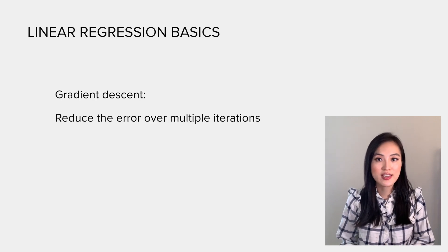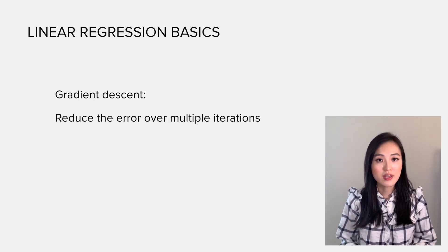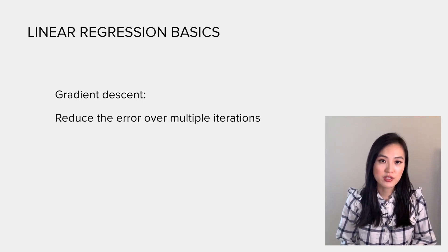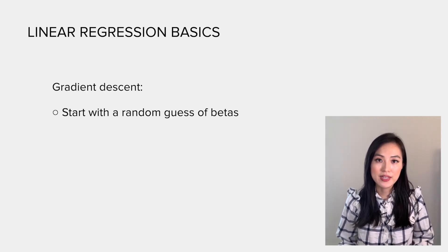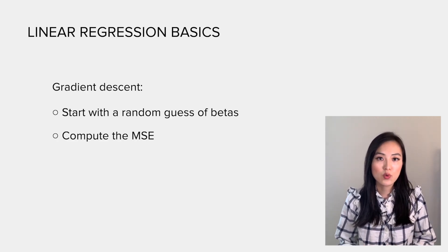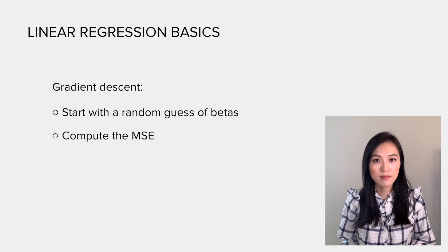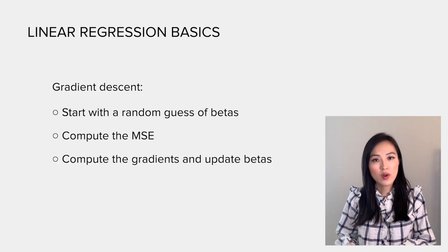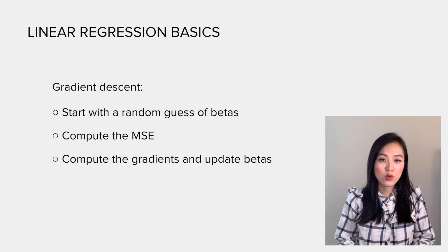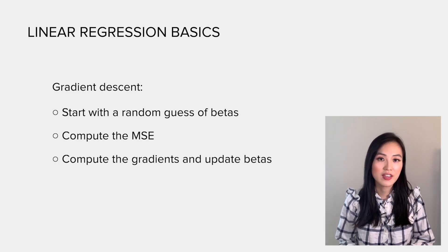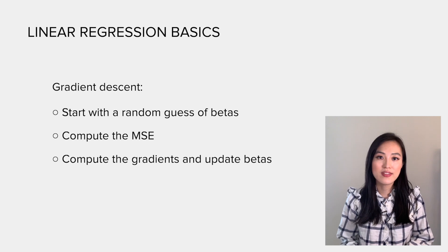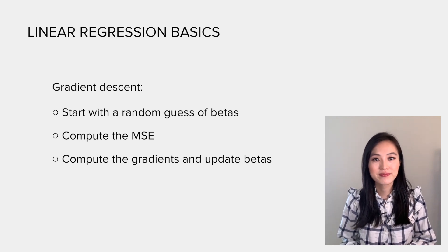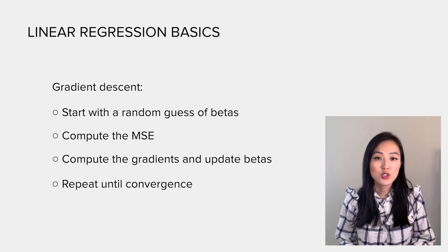Now I introduce another concept to you called gradient descent. We use it to reduce the error over multiple iterations. Intuitively speaking, we start with a random guess of betas, then we compute the mean squared error associated with them. Next, we compute the gradient at each parameter, so that will be used to update the values of betas. Don't worry if you don't understand what a gradient is; I will explain the calculation in detail later.